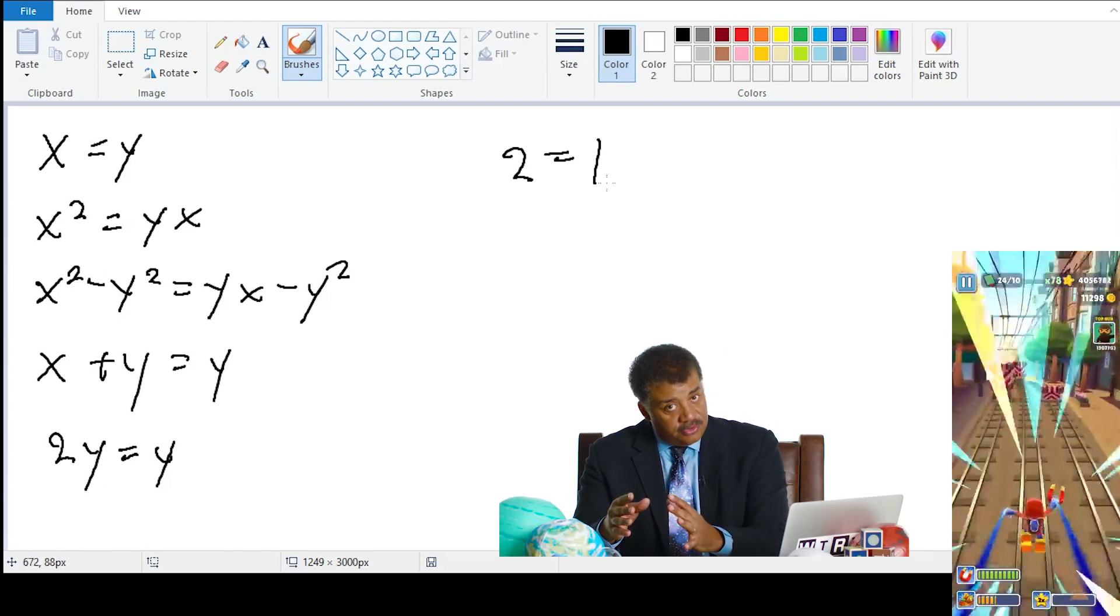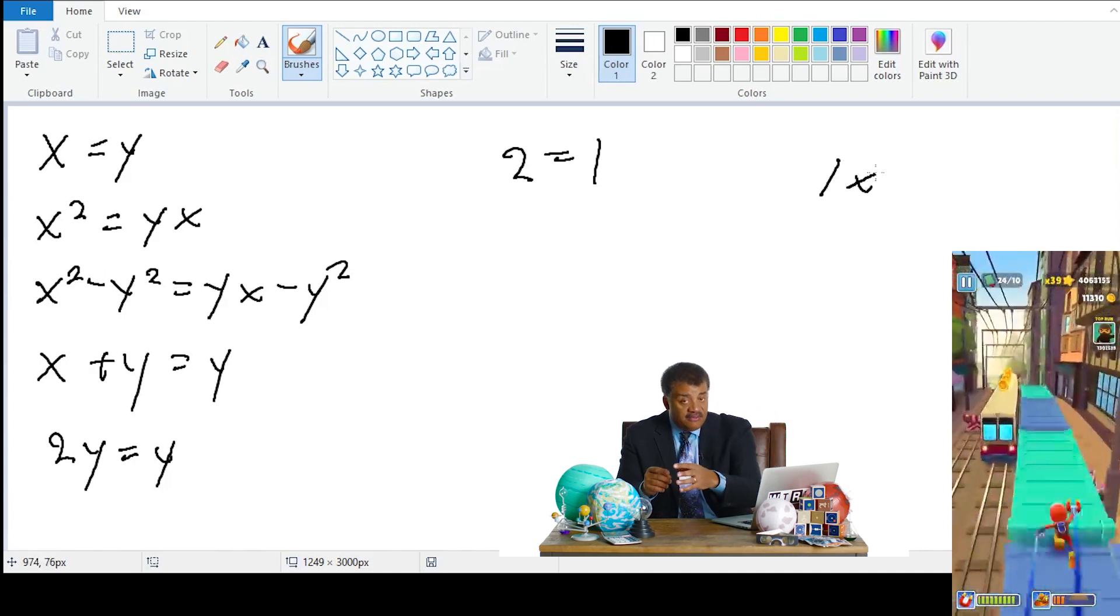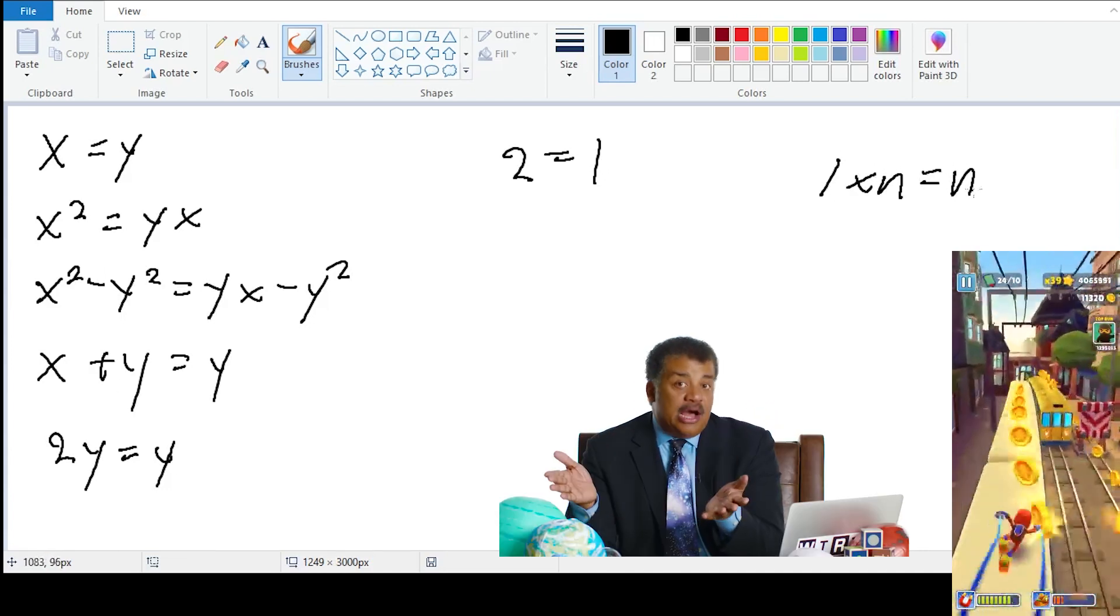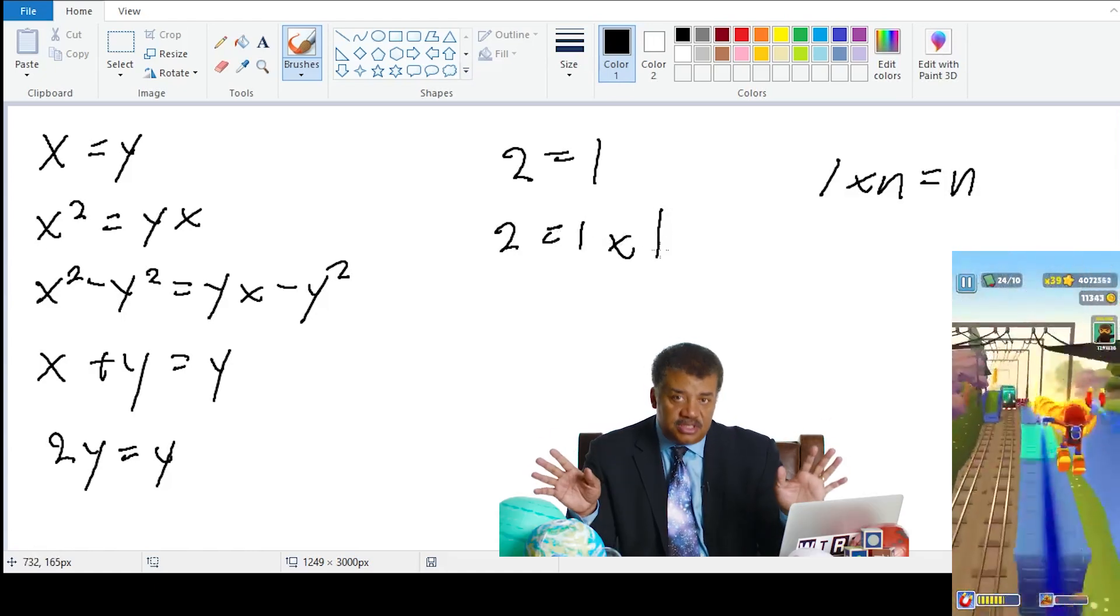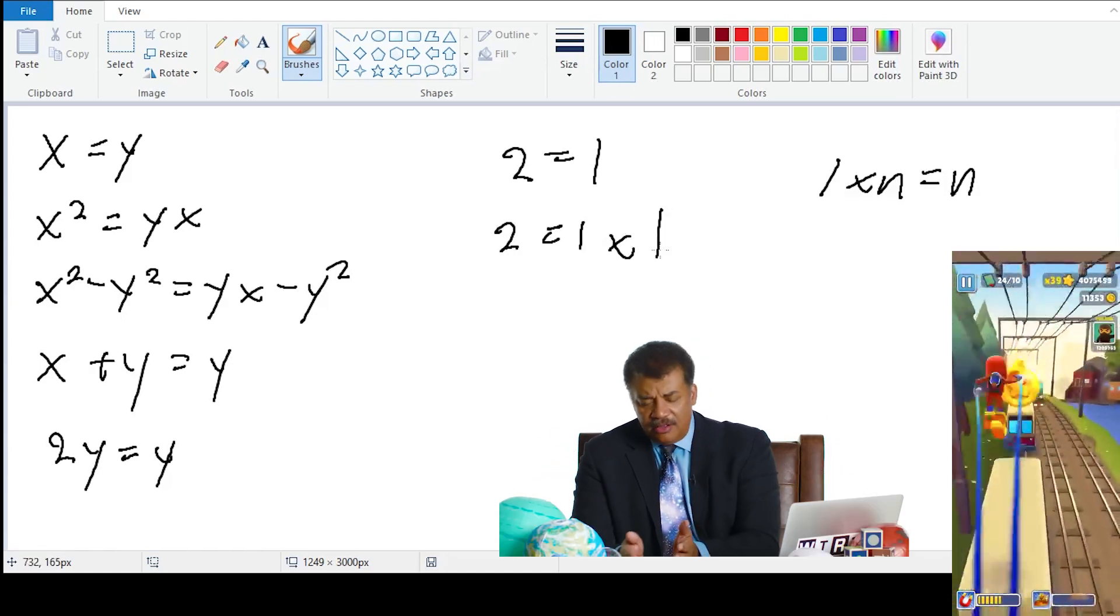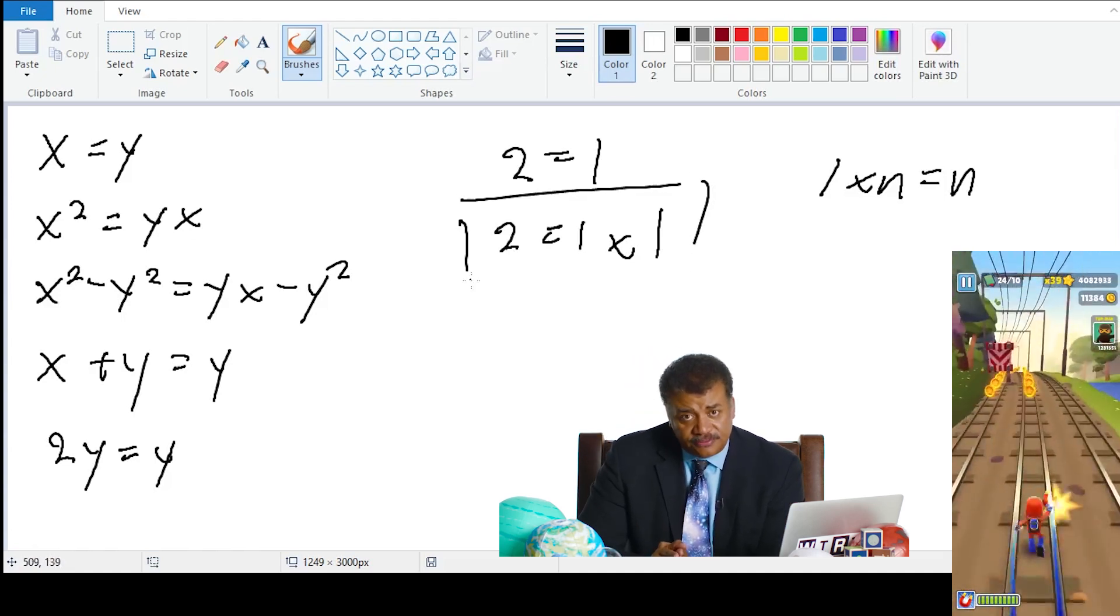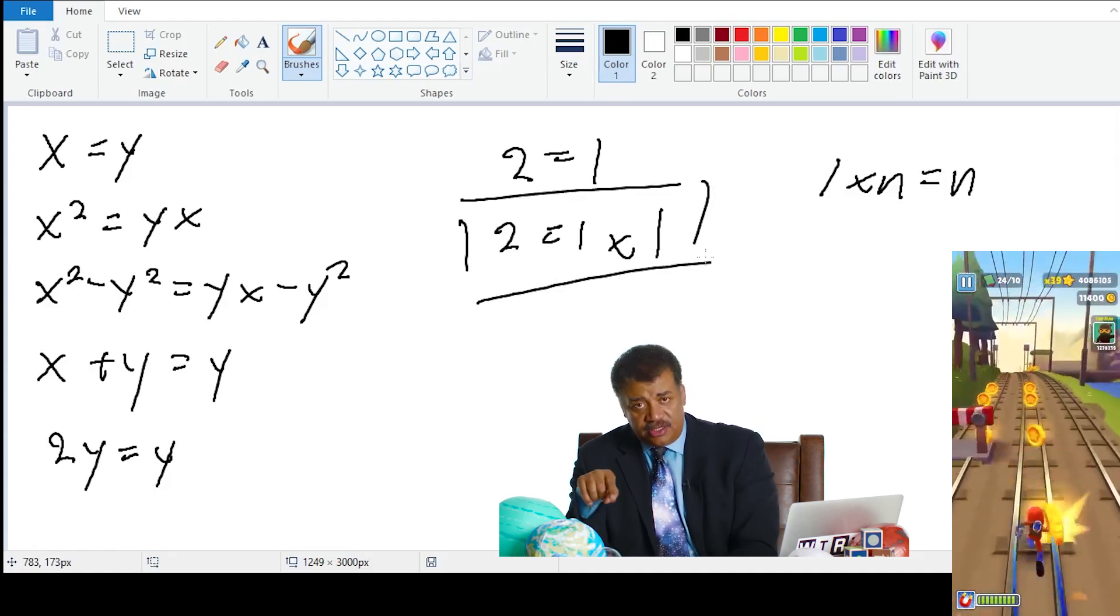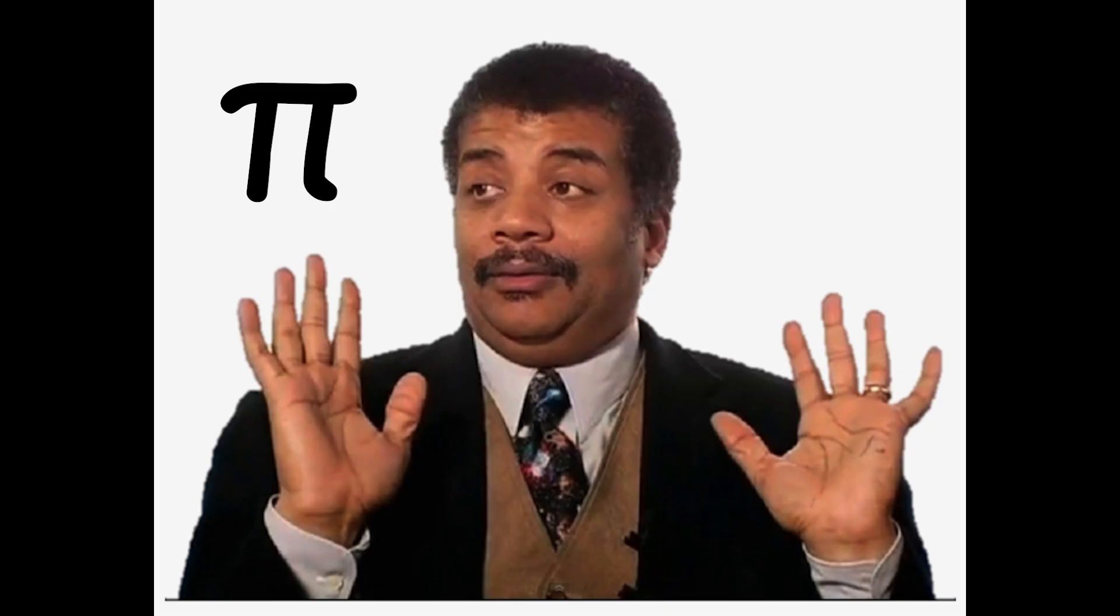Recall that it can be derived from the Peano axioms that 1 times any number n equals n. Then we can multiply the right-hand side by 1 without changing the equality. And just like that, we have shown that Howard's claim can be derived from a simple set of axioms and assumptions. Easy as pie!